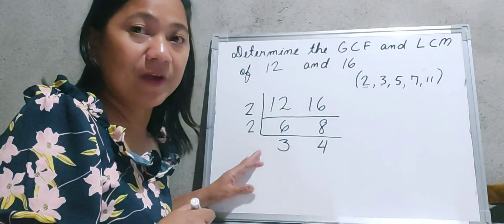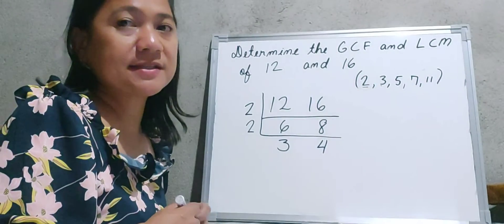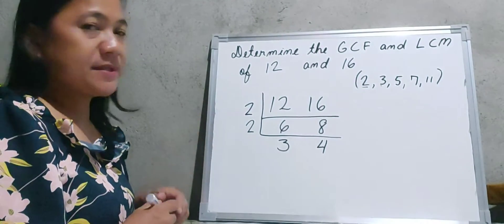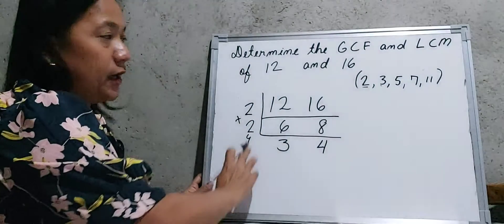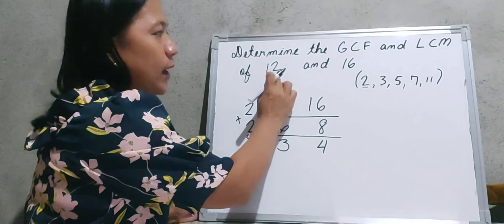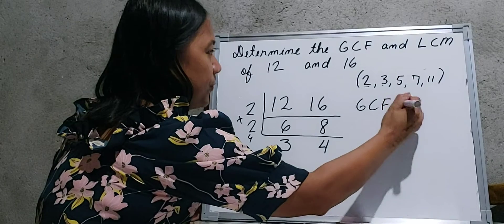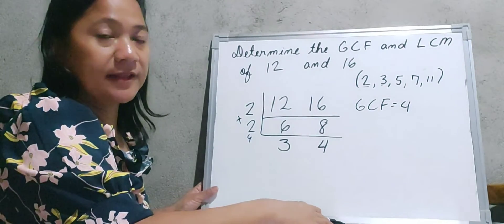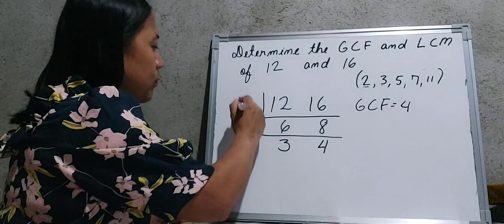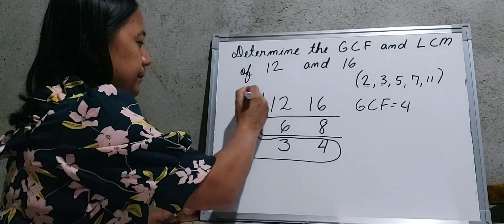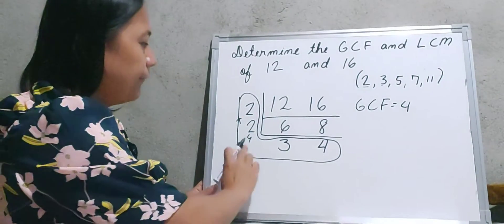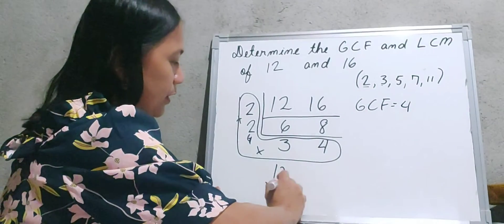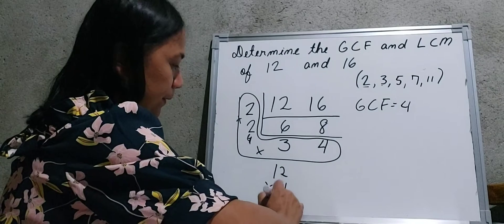We can now stop here and find the GCF of 12 and 16. We multiply the two numbers on the left side: 2 times 2 is equal to 4. Therefore, 4 is the GCF of 12 and 16. To find the LCM, we multiply all the numbers: 2 times 2 is 4, 4 times 3 is 12, and 12 times 4 is equal to 48. So the LCM of 12 and 16 is 48.